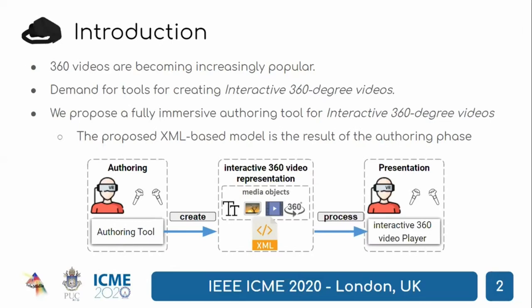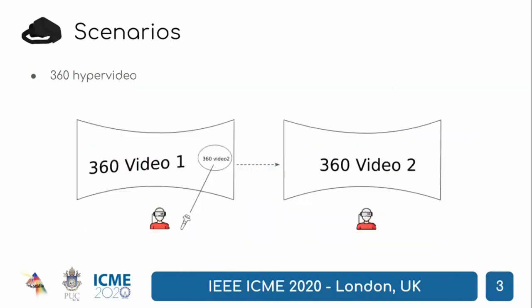We analyze different scenarios of immersive multimedia presentations based on 360 videos in order to gather the main requirements for our altering model. The first scenario, 360 hypervideo, is characterized by navigation among 360 videos, and besides that, it should be possible to overlay information to the 360 videos. An example of this scenario is a virtual tour in a museum where the viewer may navigate through different rooms, and each room could have additional information about the presented piece of art.